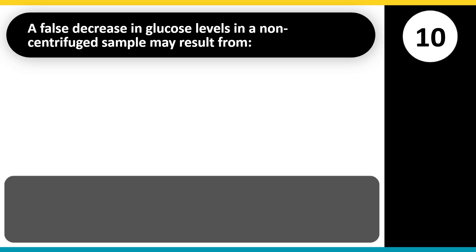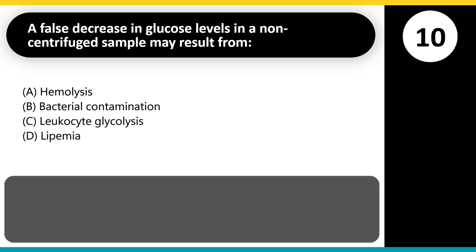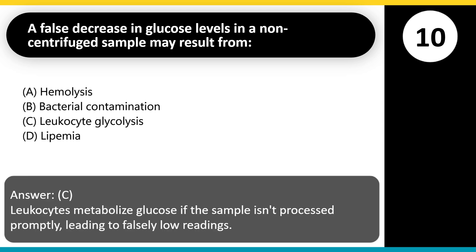A false decrease in glucose levels in a non-centrifuged sample may result from: A. Hemolysis. B. Bacterial contamination. C. Leukocyte glycolysis. D. Lipemia. Answer: C. Leukocytes metabolize glucose if the sample isn't processed promptly, leading to falsely low readings.